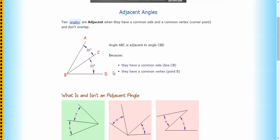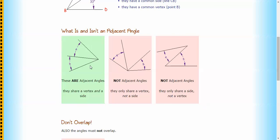Now adjacent is a bit trickier. Adjacent does actually have to be next to each other. And it says they have a common side, so they share this line in common, CB. So they do have to be next to each other. And they have a common vertex. So the angle is measured in this same space here where B is.